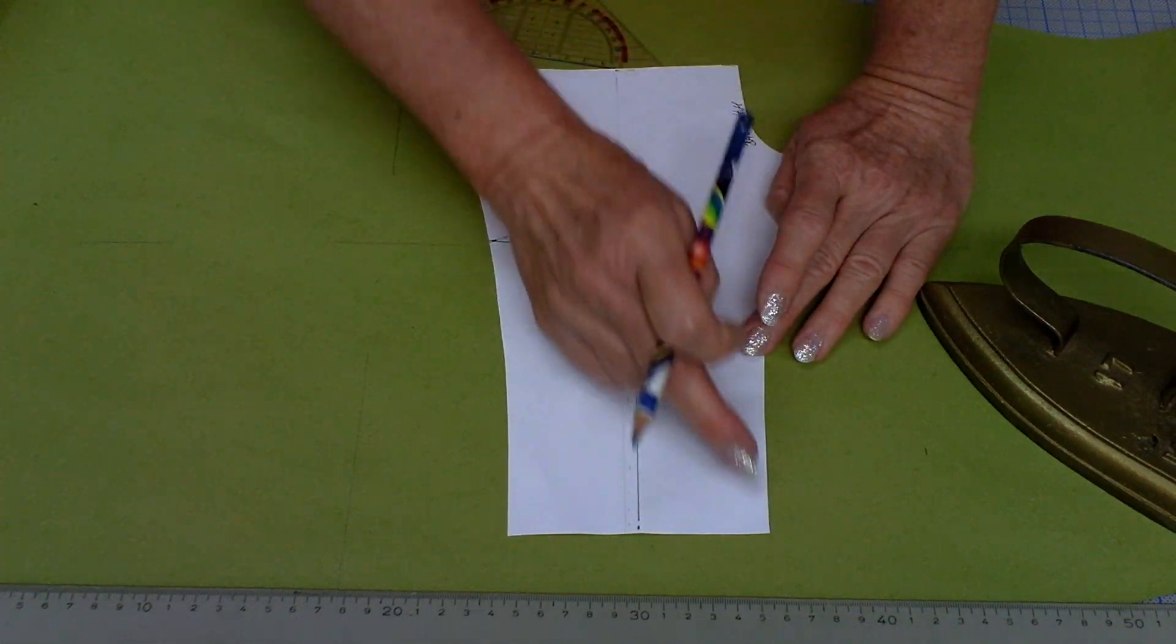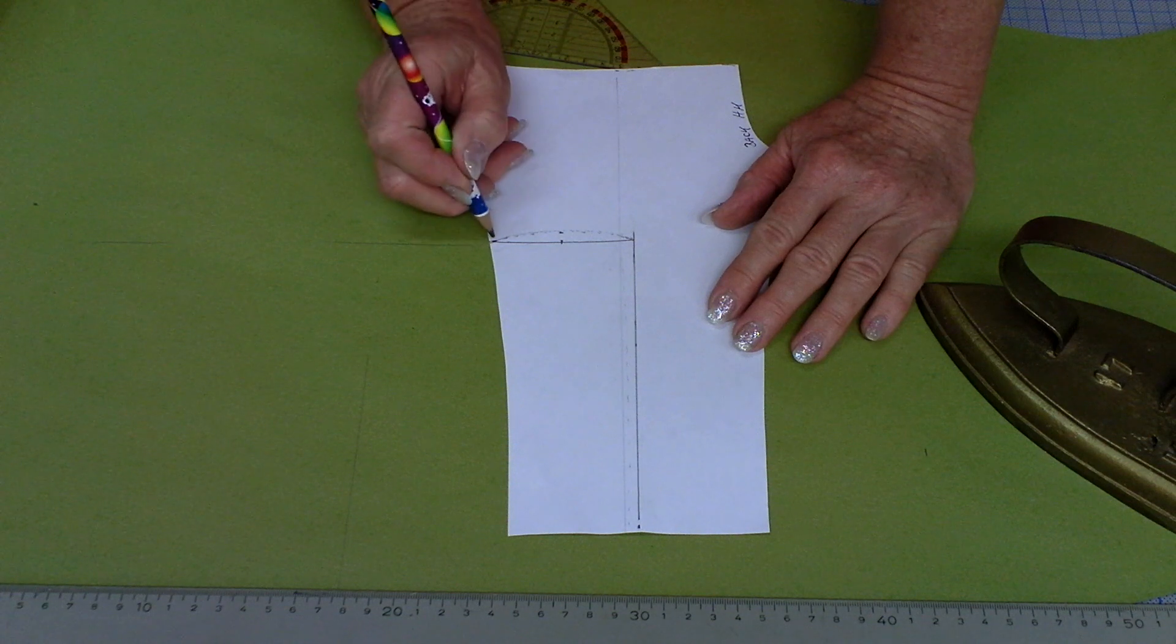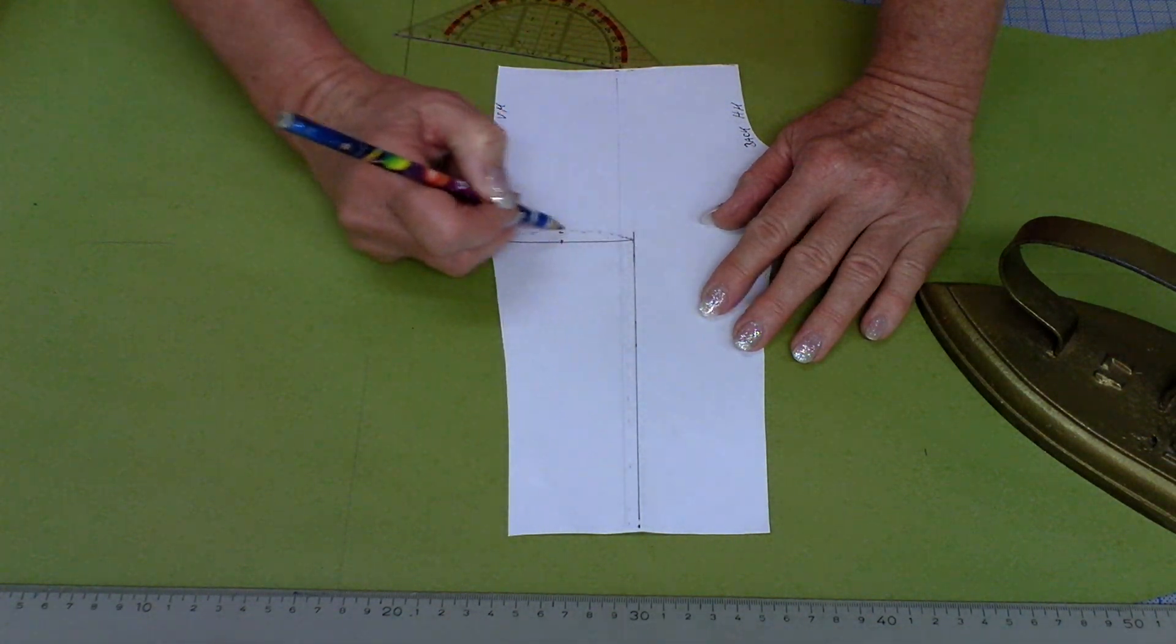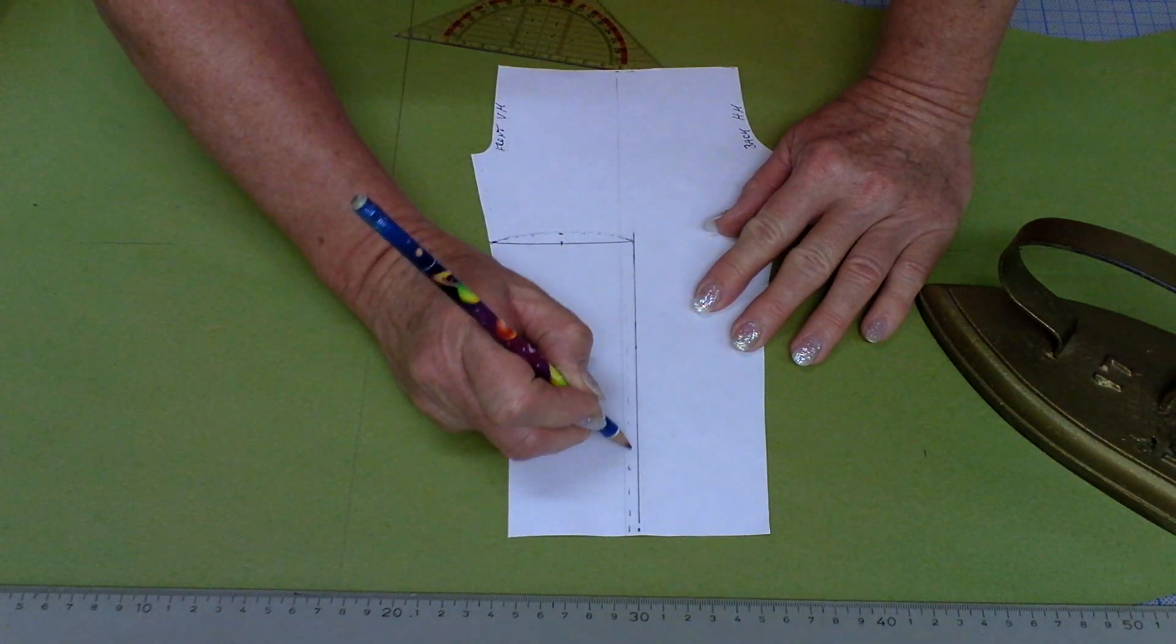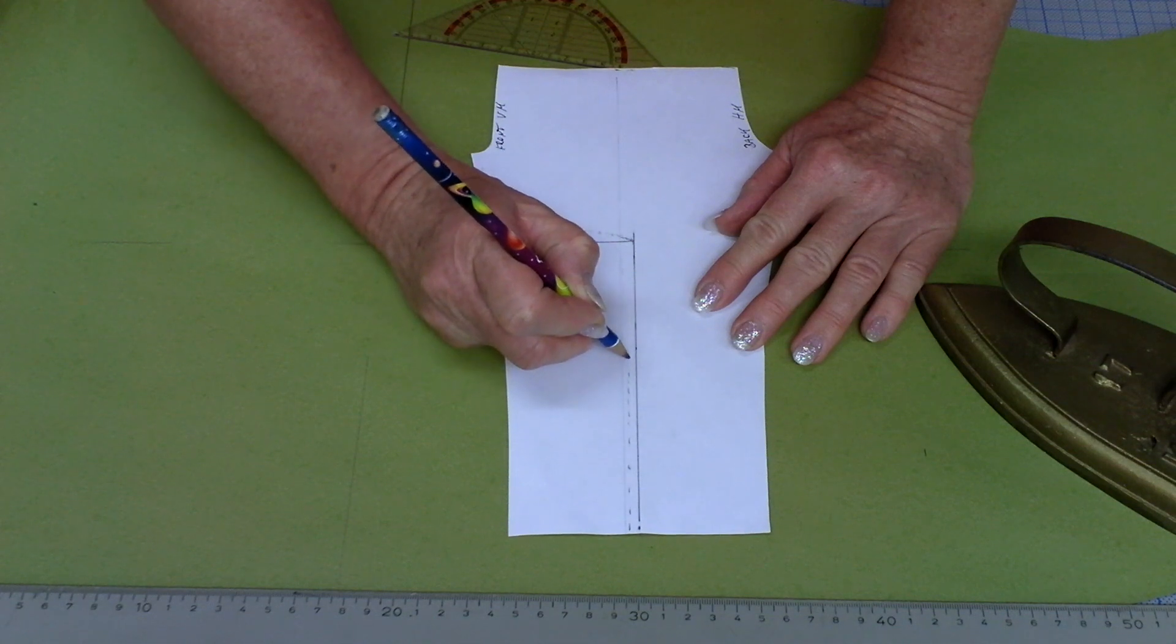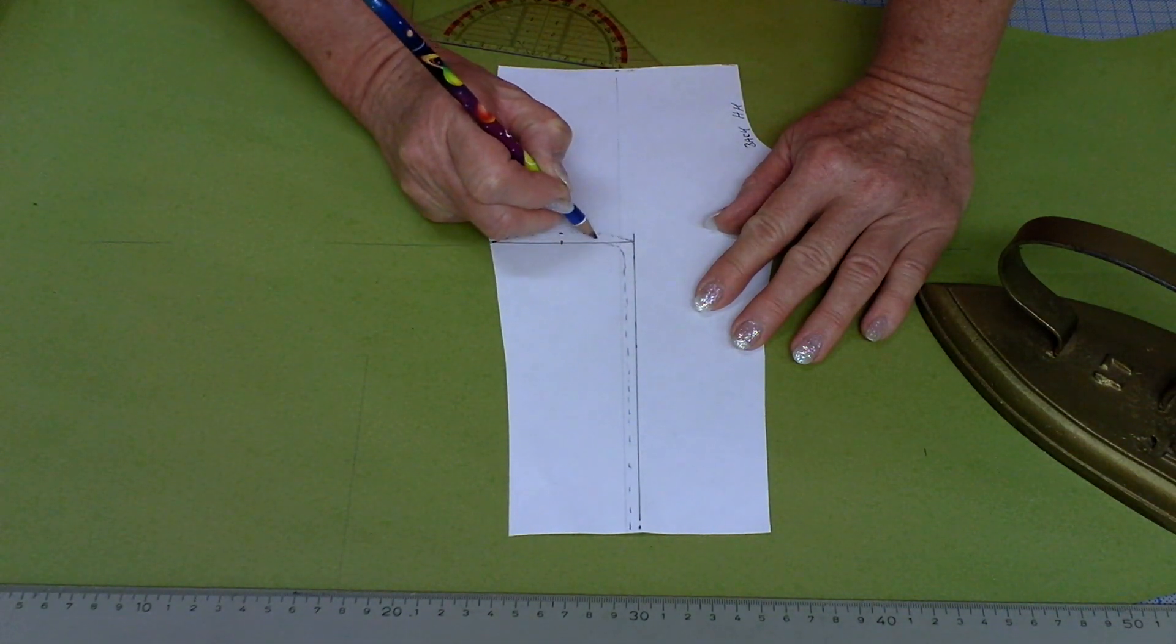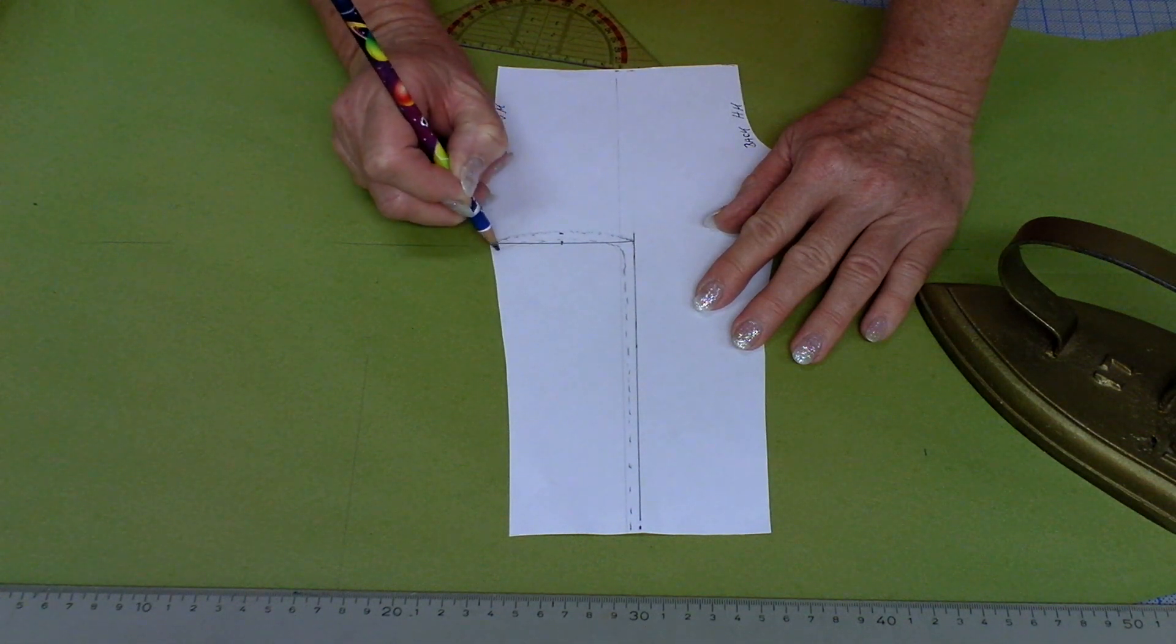Usually I write this on my pattern so I never forget if my pattern is with or without the seam allowances. So as I just mentioned I got everywhere my seam allowance and this should be the finished lines of the part I'm cutting out.